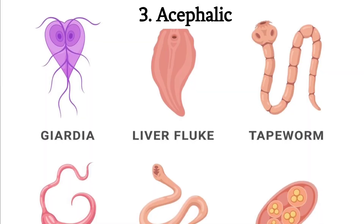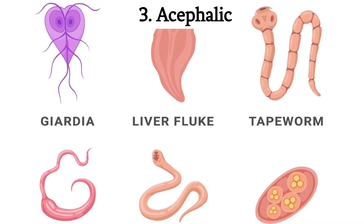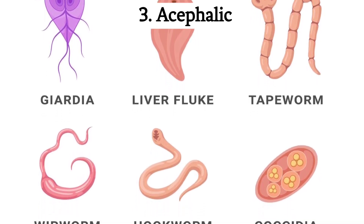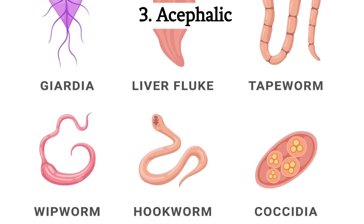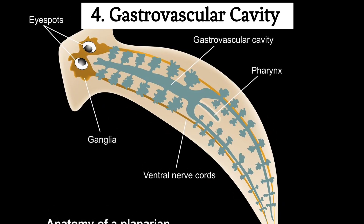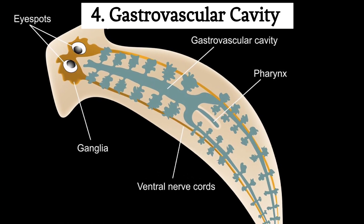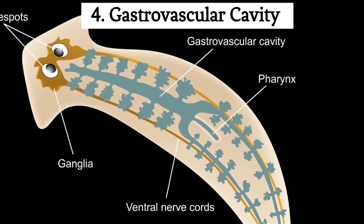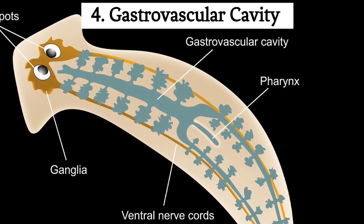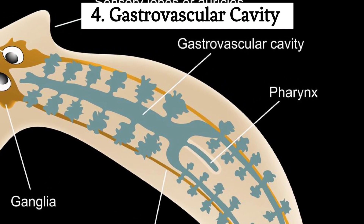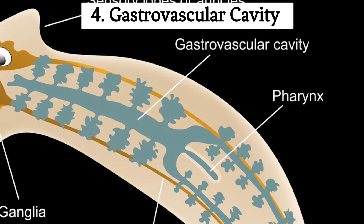Third, acephalic: most flatworms lack a true head, although they may have an anterior end with sensory structures such as eye spots or chemoreceptors. Fourth, gastrovascular cavity: they have a sac-like gastrovascular cavity with a single opening that serves as both the mouth and anus. This cavity allows for digestion and nutrient absorption.